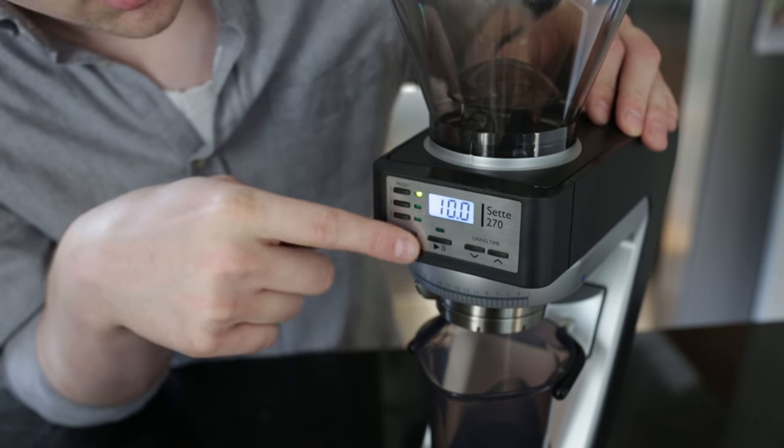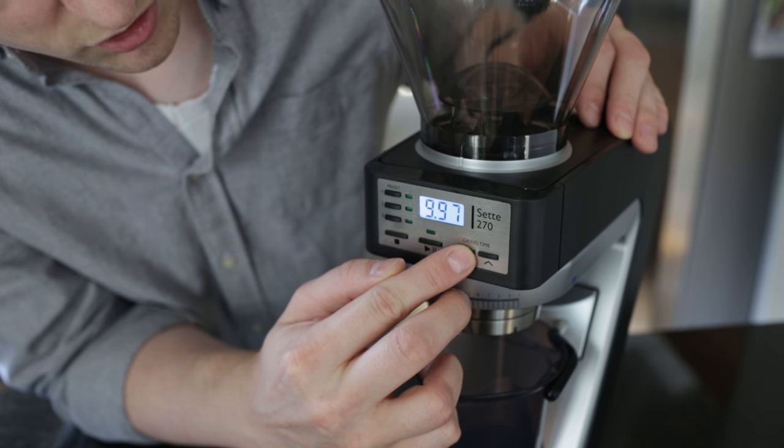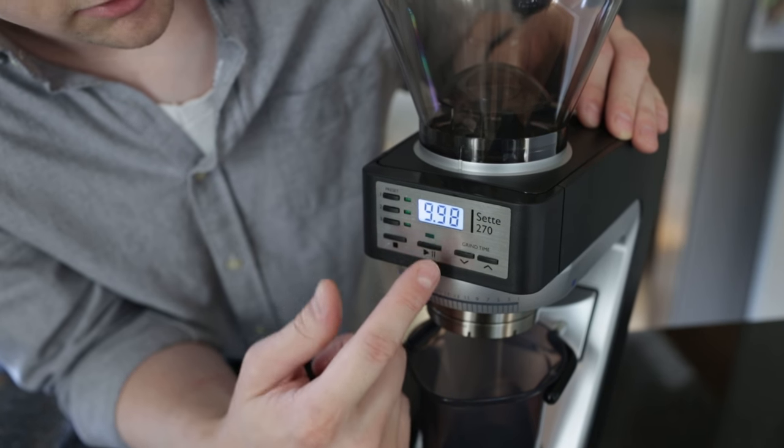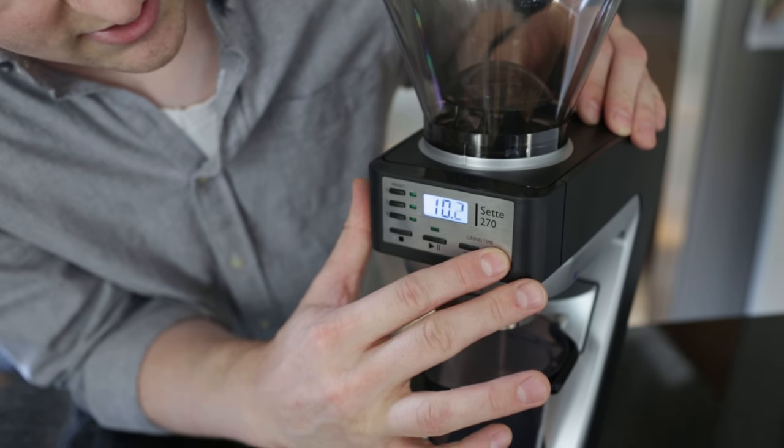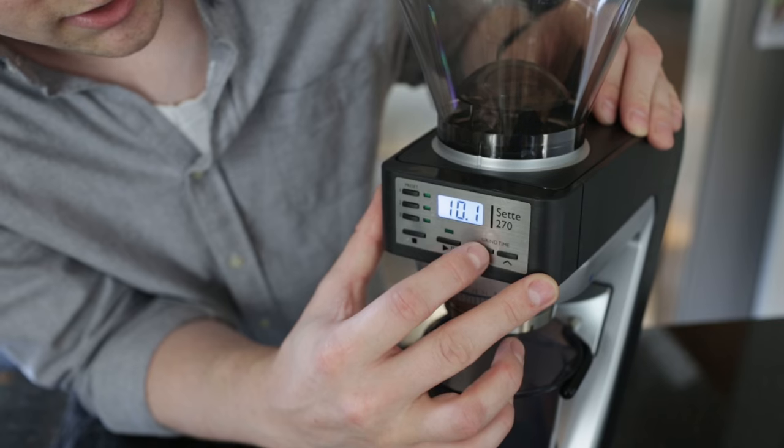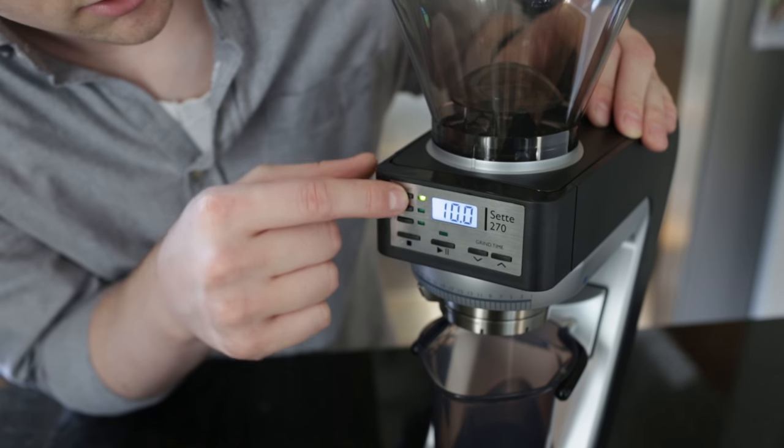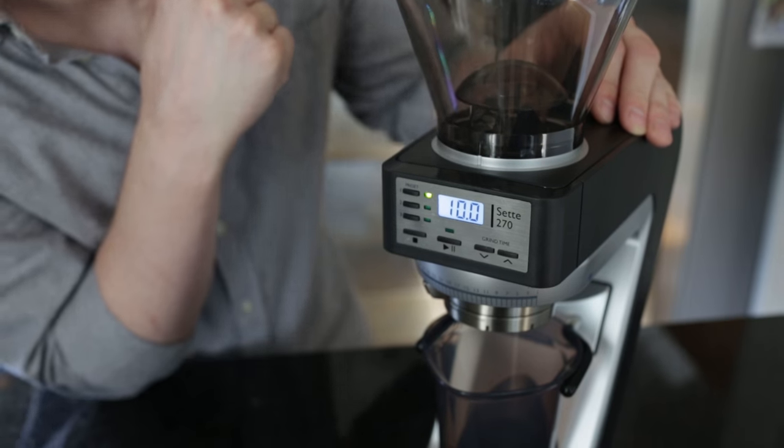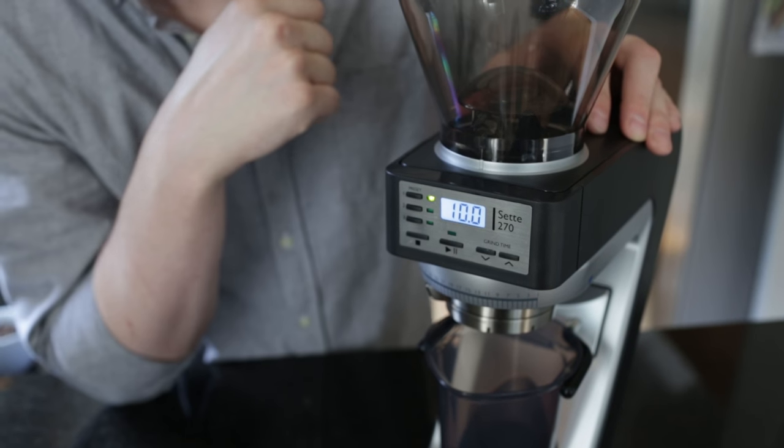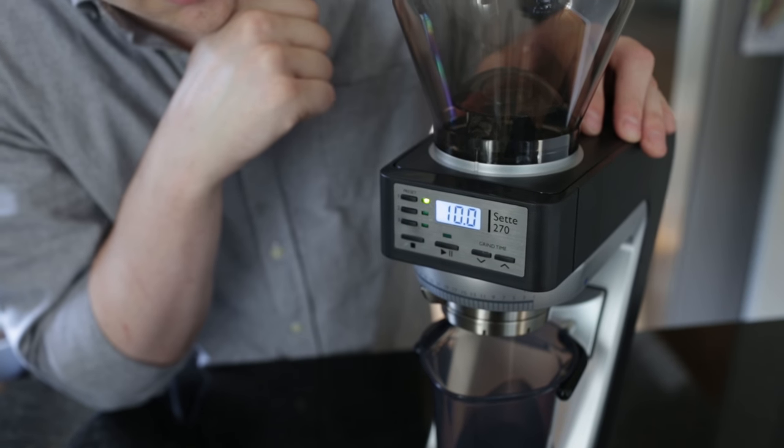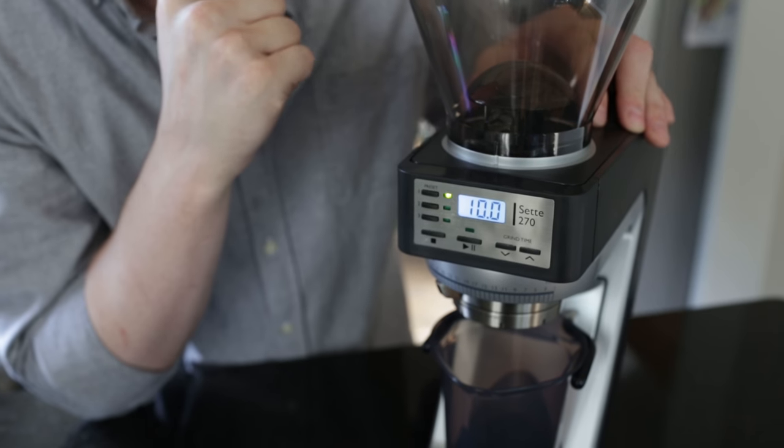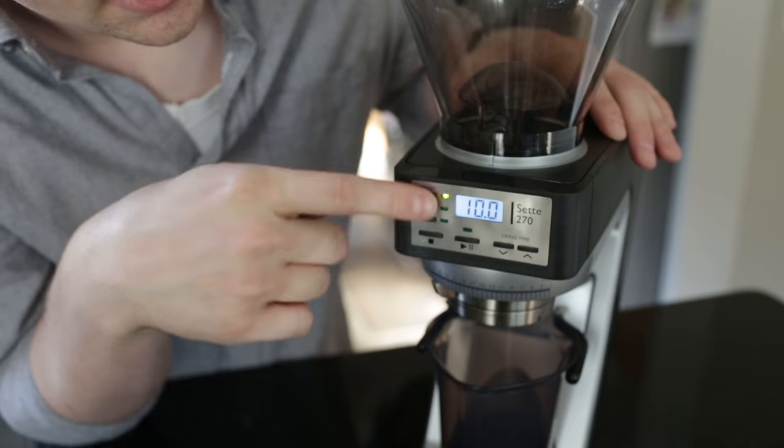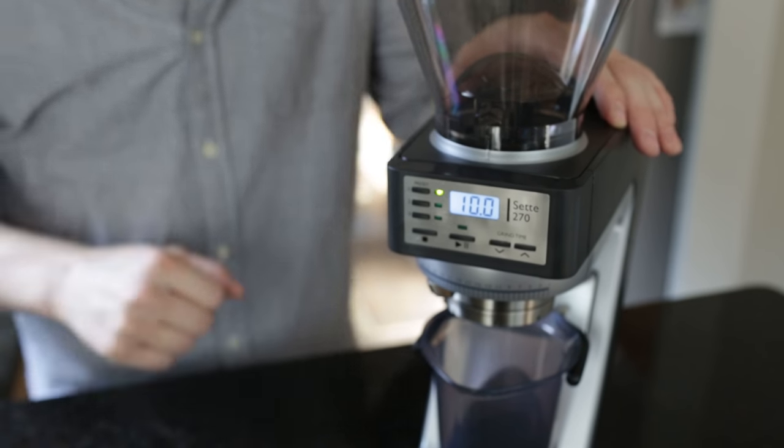Now if I want to change the time here, all I have to do is press up or down. When you're below 10 seconds, you have an accuracy of one-hundredth of a second. Above 10 seconds, it's just one-tenth of a second. To save a preset, all you need to do is hold the preset button down until the screen blinks, and then it's saved. So again, really easy, really quick to dial in and save your favorite recipes, or just grind however much coffee you need, figure out what that time is, plug it right in, and save it for later.